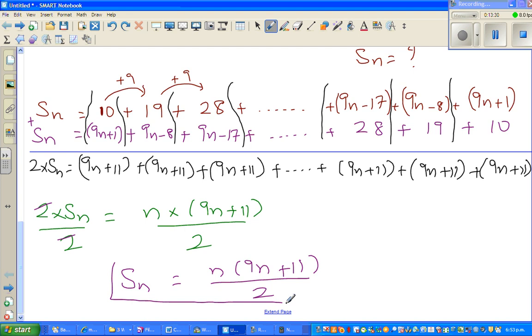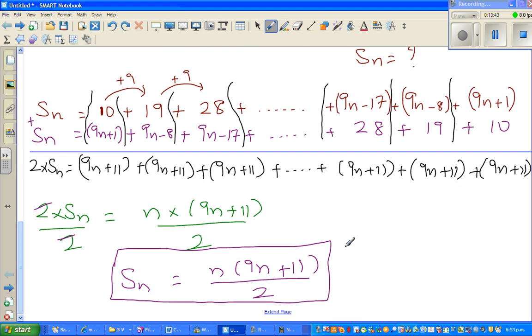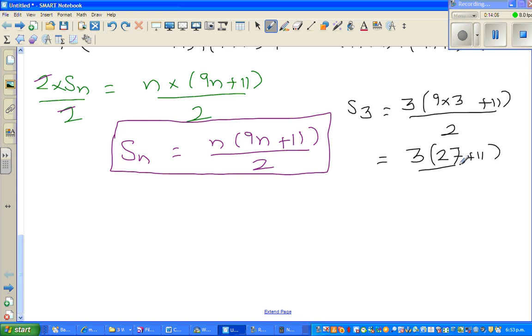Now we need to check this formula, whether this formula is really right or wrong. So we said S3 is 57. Let's check that. So S3 is you have to put 3 in place of n. So let's see. 3 times 9n times 3 plus 11 divided by 2. So it is 3 times, this is 27 plus 11 divided by 2.